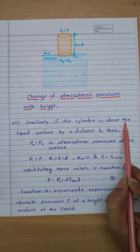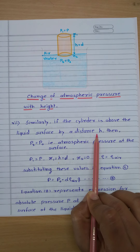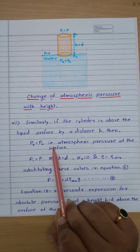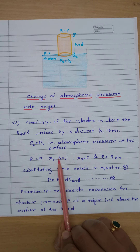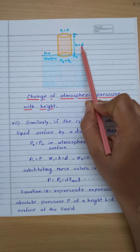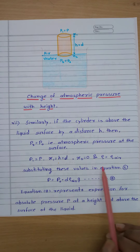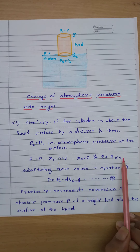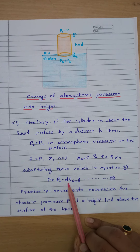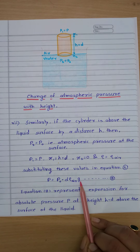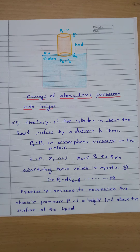Similarly, if the cylinder is above the liquid surface by a distance H, then p2 is equal to p0 (atmospheric pressure at the surface), p1 is equal to p, x1 is equal to H equal to D (depth), x2 is equal to 0, and rho is equal to rho_air (density of air). Substituting these values into equation number 6: p is equal to p0 minus D·rho_air·g — equation number eight.